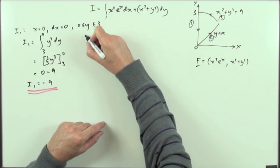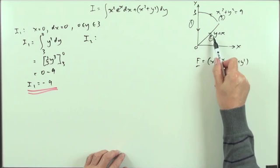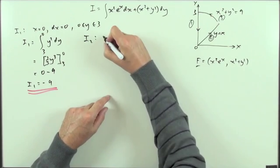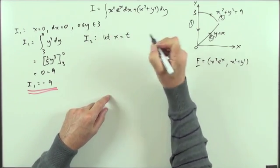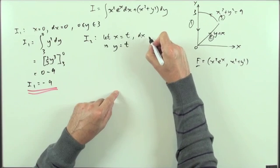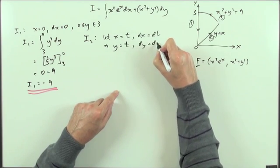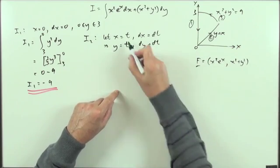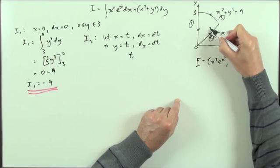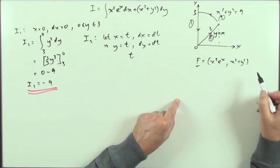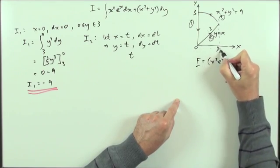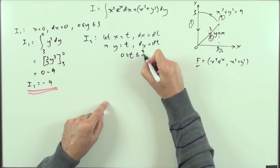Now what about I2? I've got x's and y's, so I'll create a parameter t, letting x equal t, which means y also equals t since y equals x. So dx equals dt and dy equals dt. Since t is mirroring x, and x goes from zero until it hits the circle — that's a 45-degree triangle with radius three, so the intersection is at three divided by root two — t goes from zero to three upon root two.